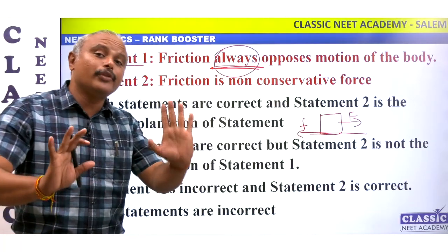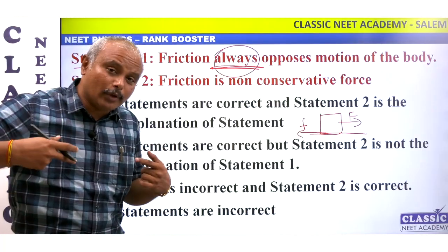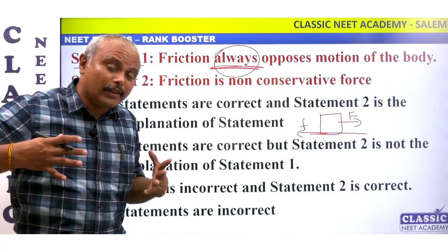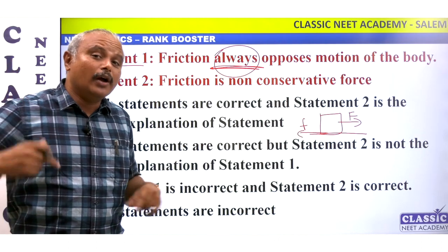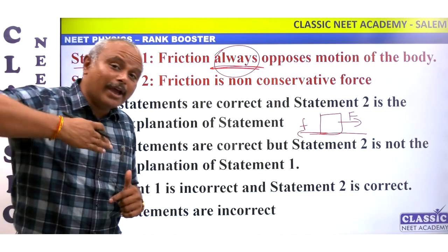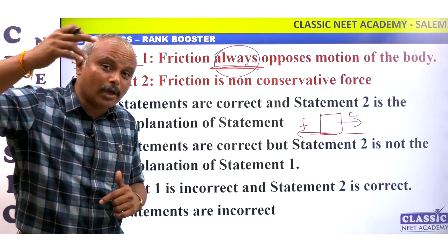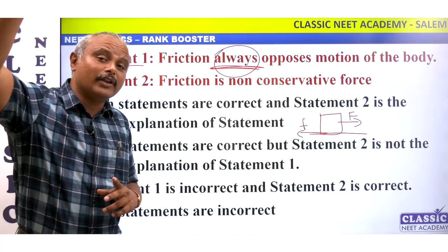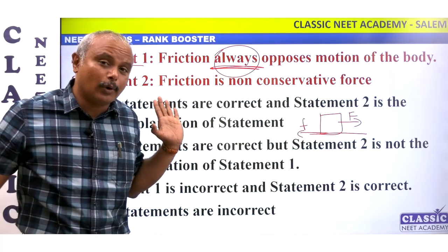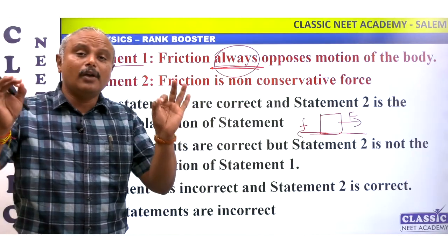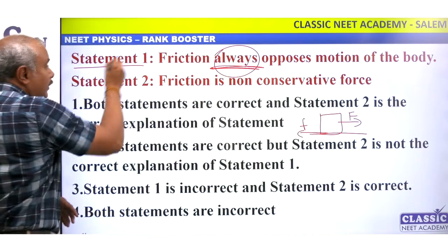When you pedal a bicycle, the friction force acts in the forward direction, not backward. When you are rolling in the incline plane, rolling in the direction of motion, the friction force acts in the same direction. So friction always opposes the motion — that statement is not correct. The first statement is incorrect.